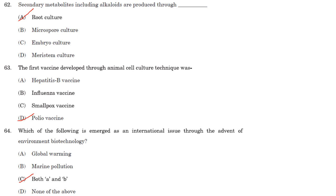Which of the following has emerged as an international issue through the advent of environmental biotechnology? The answer is both A and B — global warming and marine pollution.